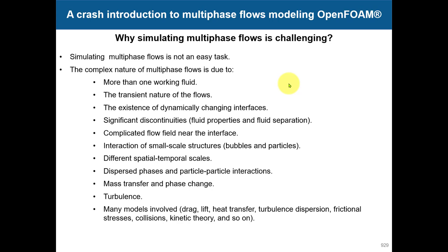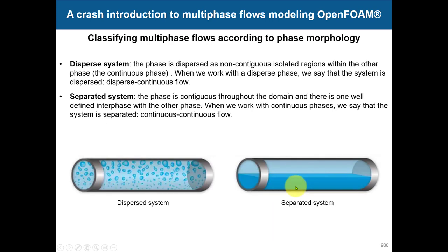You have dynamically changing interfaces as things are moving, and having more than two phases makes it even trickier. You have significant discontinuities — for instance, between air and water, that is a very strong discontinuity, something equivalent to a shock wave, requiring elaborate numerical methods. There are complicated flow fields near the interface, interaction of small-scale structures like bubbles and particles, many different spatial and temporal scales, spare phases, particle-particle interaction, mass transfer and phase change — add turbulence and it becomes really, really difficult.